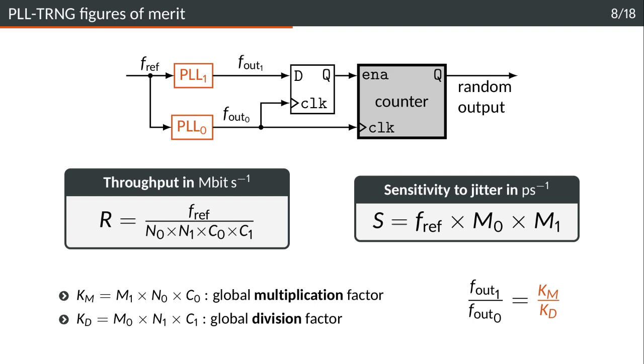When we evaluate the PLL-TRNG we use two figures of merit. The first one is the throughput in megabits per second written R and the second one is the sensitivity to jitter in per picoseconds S. We want the throughput to be as high as possible and we also want the sensitivity to jitter to be as high as possible because it is related to the quality of randomness extraction.